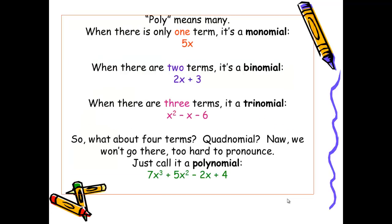So poly means many. When there's only one term, it's a monomial, such as 5x. When there are two terms, it's a binomial, such as 2x + 3. When there are three terms, it's a trinomial, such as x² - x - 6. So what about four terms? Should we call it a quadnomial? No, it's just too hard to pronounce. So once we get past three in a trinomial, we just use the term polynomial, regardless of how many terms there are.